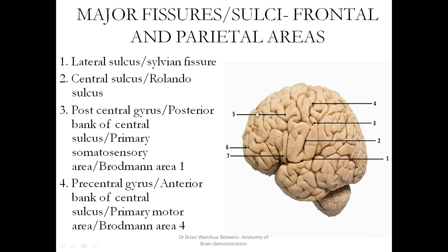The labels are on the frontal and the parietal areas. Label 1 shows us the lateral sulcus, or the Sylvian fissure, which divides the temporal lobe from the frontal and the parietal. Label 2 shows you the central sulcus, which divides the frontal and the parietal lobe.